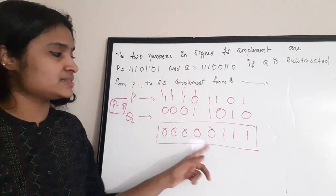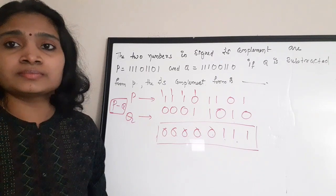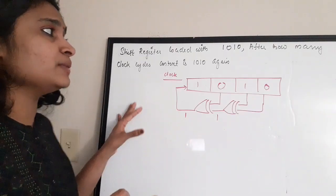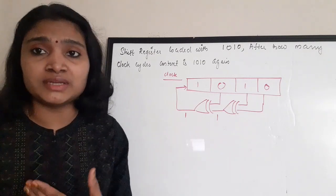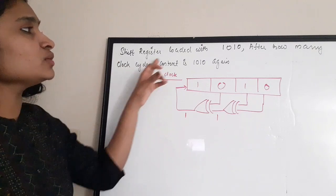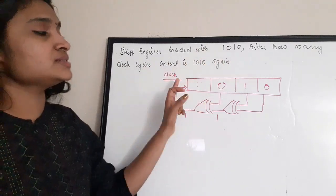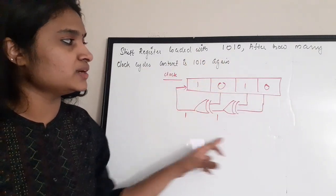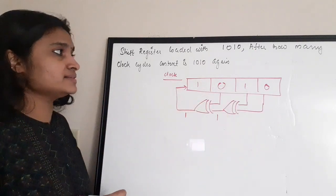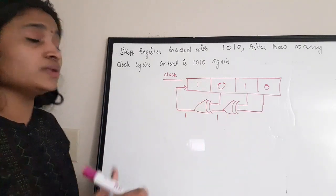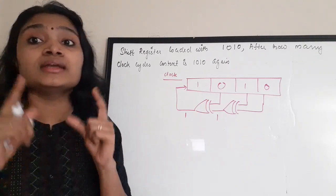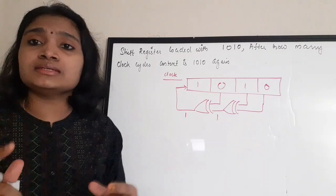That is the answer for the two's complement subtraction question. The next question is a shift register type. A shift register is loaded with initial content 1 0 1 0. The question asks: after how many clock cycles does the content return to 1 0 1 0 again?